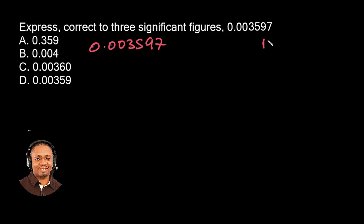Before we answer the question, I'll give you the rules that will guide us and help us know which numbers are significant figures. The first rule is that all the non-zero digits, from one to nine, all of them are always significant.